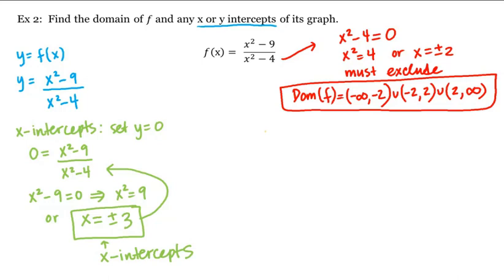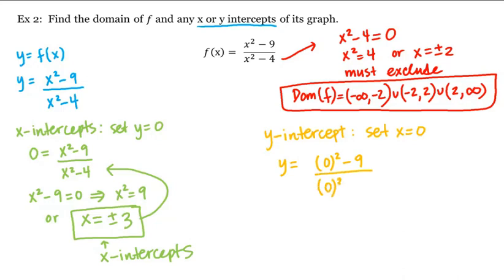Let's see if the graph of f has a y-intercept, which we can find by setting x equal to 0. We have y is equal to 0 squared minus 9 divided by 0 squared minus 4, or y is equal to 9 fourths. So the graph does have a y-intercept. And this is how we find the domain of a function and any x or y-intercepts of its graph.